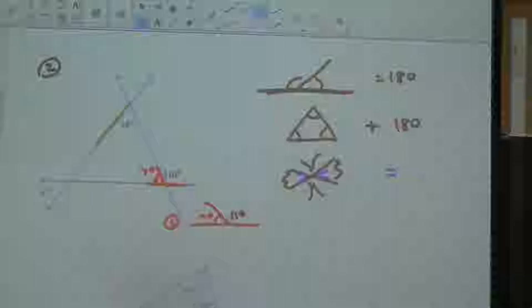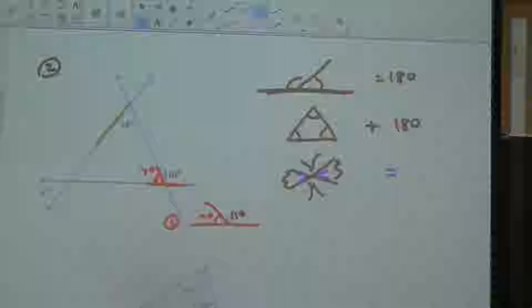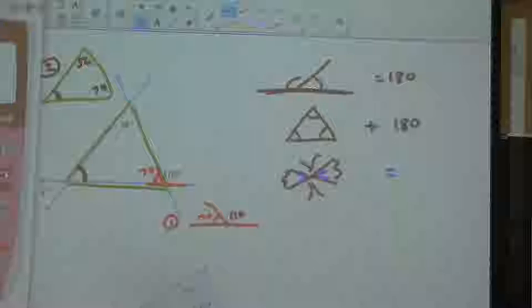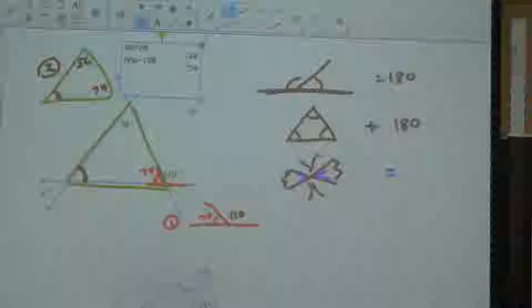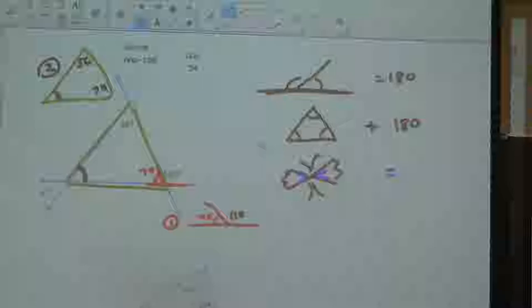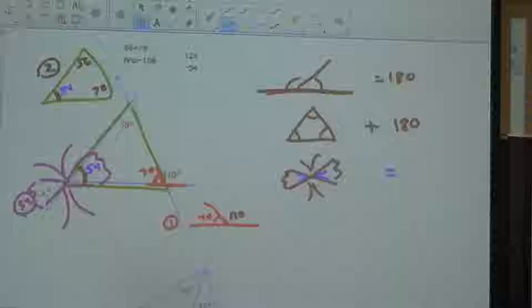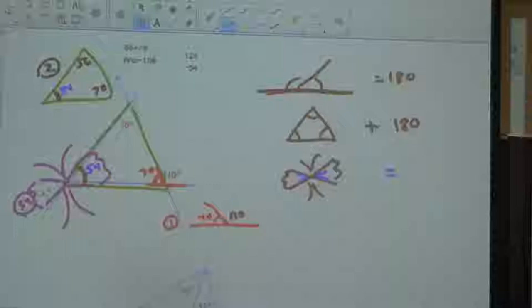Step number two is to look at your triangle. I have a 56 and a 70, so I can now get this angle. I add those two up and subtract from 180. So 56 plus 70, subtract from 180 — this angle is going to be 54. Even if you're not in this module, pay attention because you'll have these problems on your test. Then using the butterfly — vertical angles — this angle is also 54. So I jumped inside the triangle to solve it, then jumped outside using the butterfly.